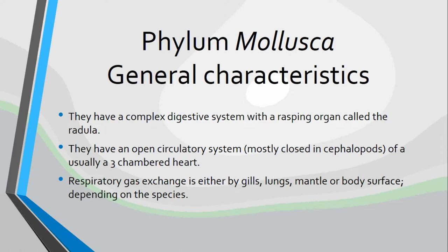They have a complex digestive system with a rasping organ called the radula. The snails and slugs have a very prominent radula, and that is how they eat. Imagine if your tongue was a cheese grater — that would be very reminiscent of the molluscan radula. They use that organ to lick whatever they're eating, and it just grates the food particles off and into their mouth. We'll talk more about the radula in the next few lessons.